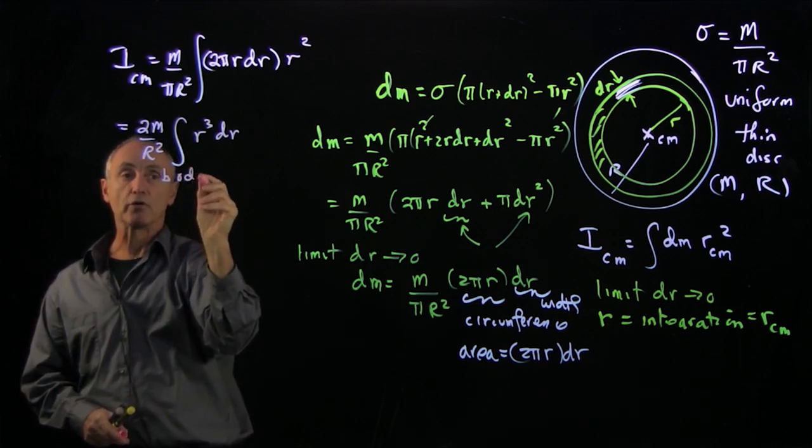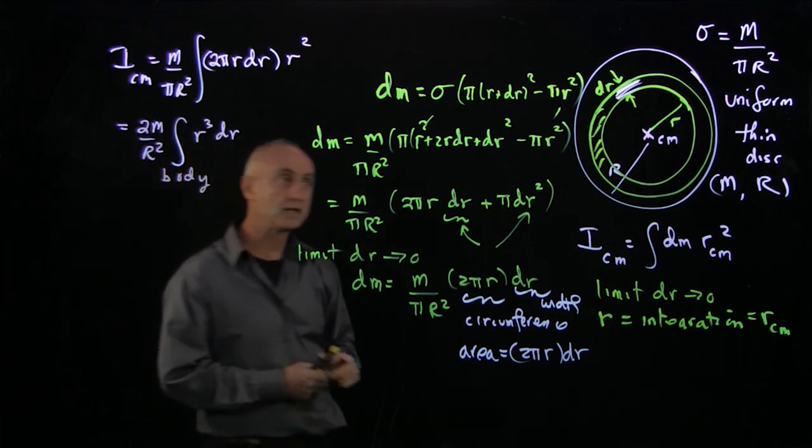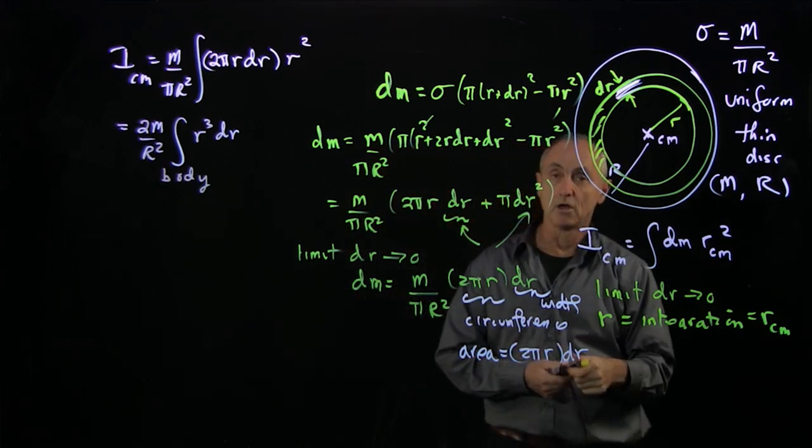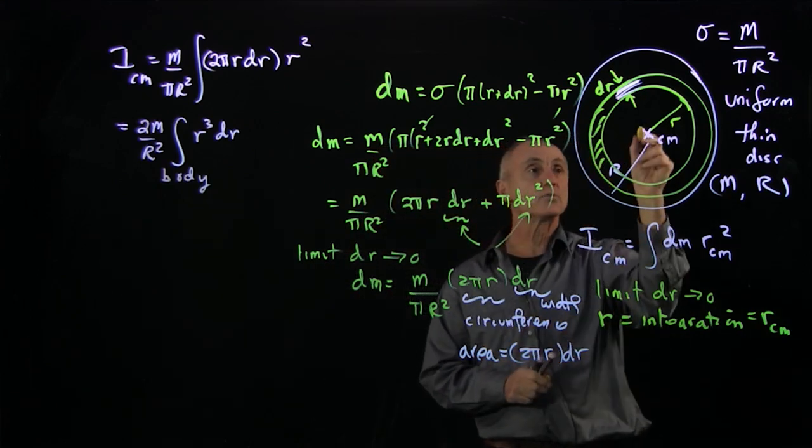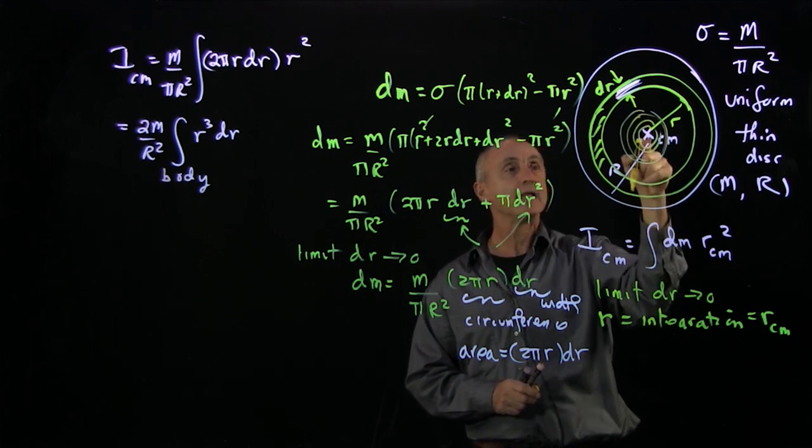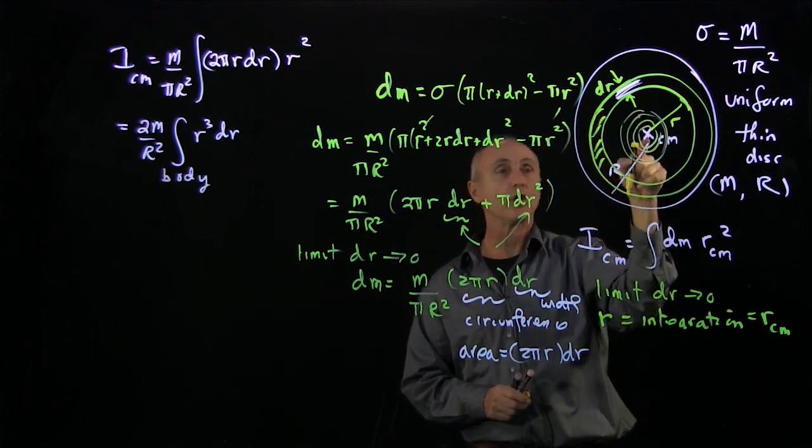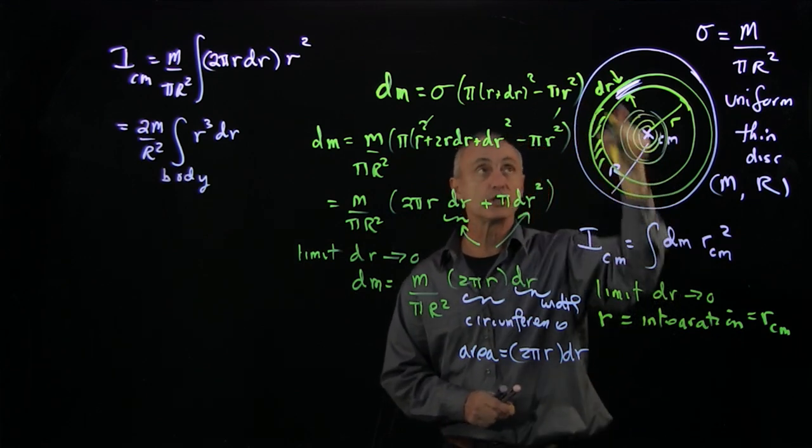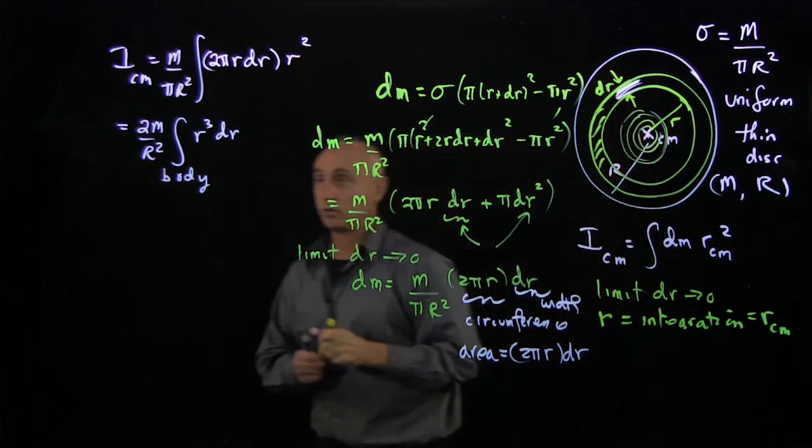And so the π's will cancel. I have 2m over r² times the integral of r³ dr. Now we're supposedly integrating over the body. But what does that body integral actually mean?